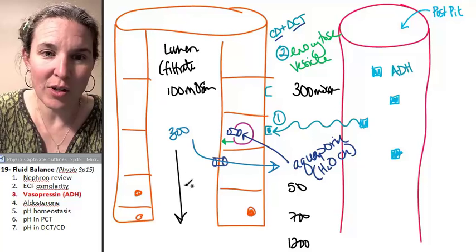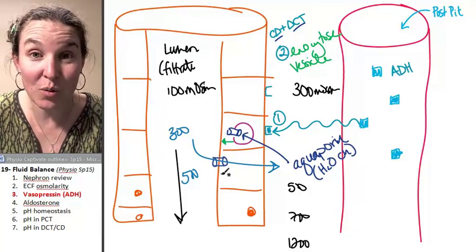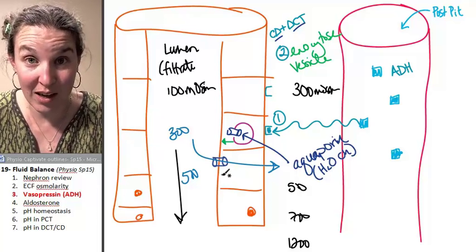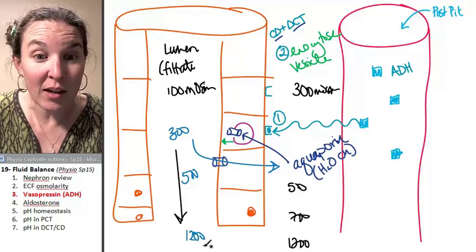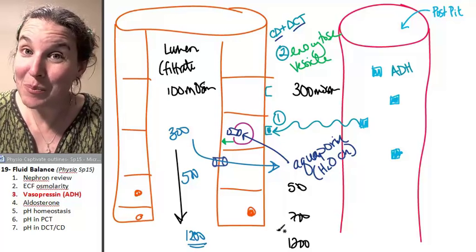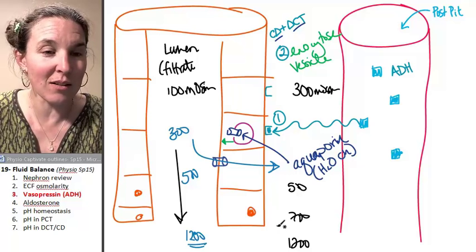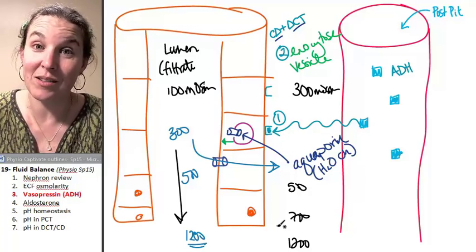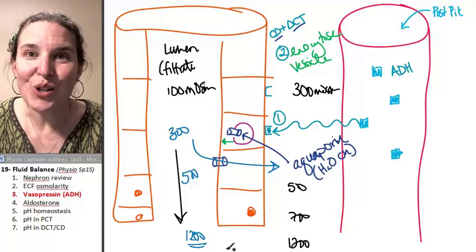We'll get up to 300, we'll get up to 500, depending on how many aquaporins you insert into the luminal edge. You can get all the way up to 1,200. If you can get your pee up to 1,200 milliosmoles, that's the orange pee that you're like, oops, didn't drink enough water today. You probably don't feel so hot either. But you can do it.